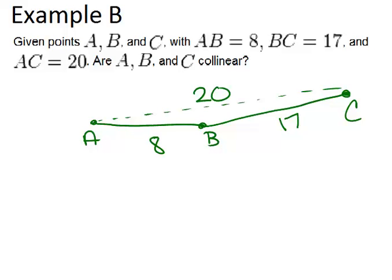Are A, B, and C collinear? Now, if these three points were collinear, that would mean that 8 plus 17 would have to equal up to 20. But because 8 plus 17 does not equal 20, those three points must not be on the same line. They must actually form a triangle as drawn right here.